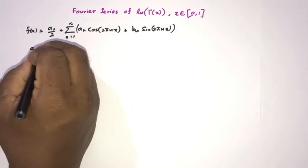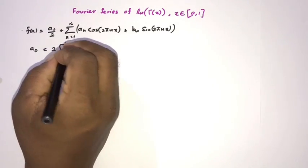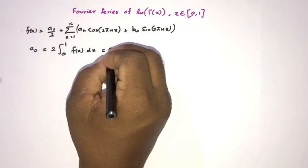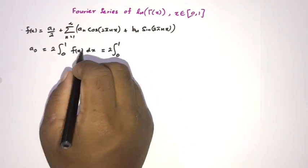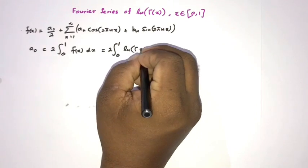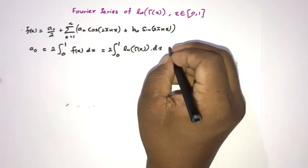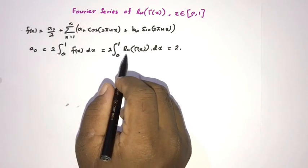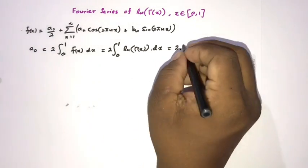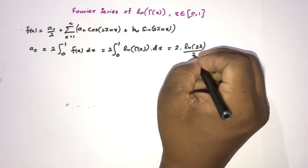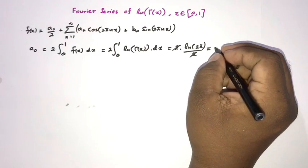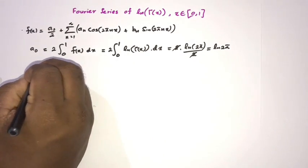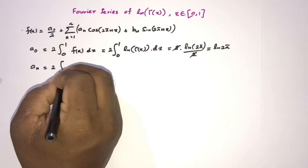We know a₀ = 2 times the integral from 0 to 1 of f(x) dx. Here f(x) = ln(Γ(x)), so a₀ = 2∫₀¹ ln(Γ(x)) dx. I solved this integral in a previous video and the answer is ln(2π/2)·2, which simplifies to ln(2π).